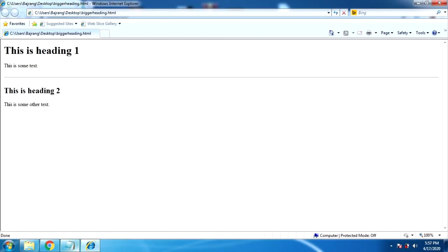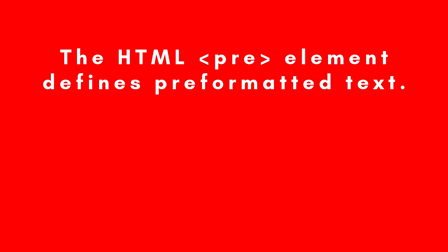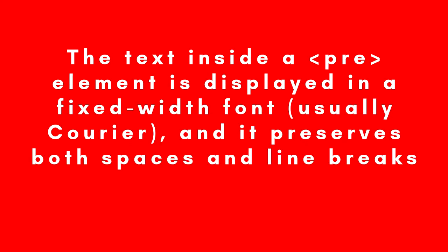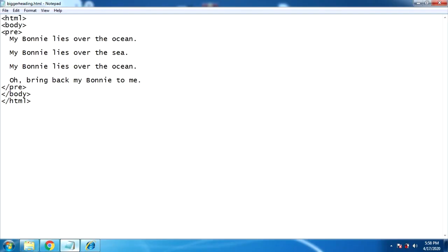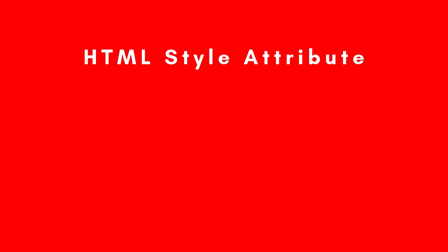Next, the HTML pre element. The pre element defines pre-formatted text. The text is already in a pre-formatted pattern and that pattern will be maintained when enclosed inside the pre tag. The text inside a pre element is displayed in a fixed-width font, usually Courier, and it preserves both spaces and line breaks.